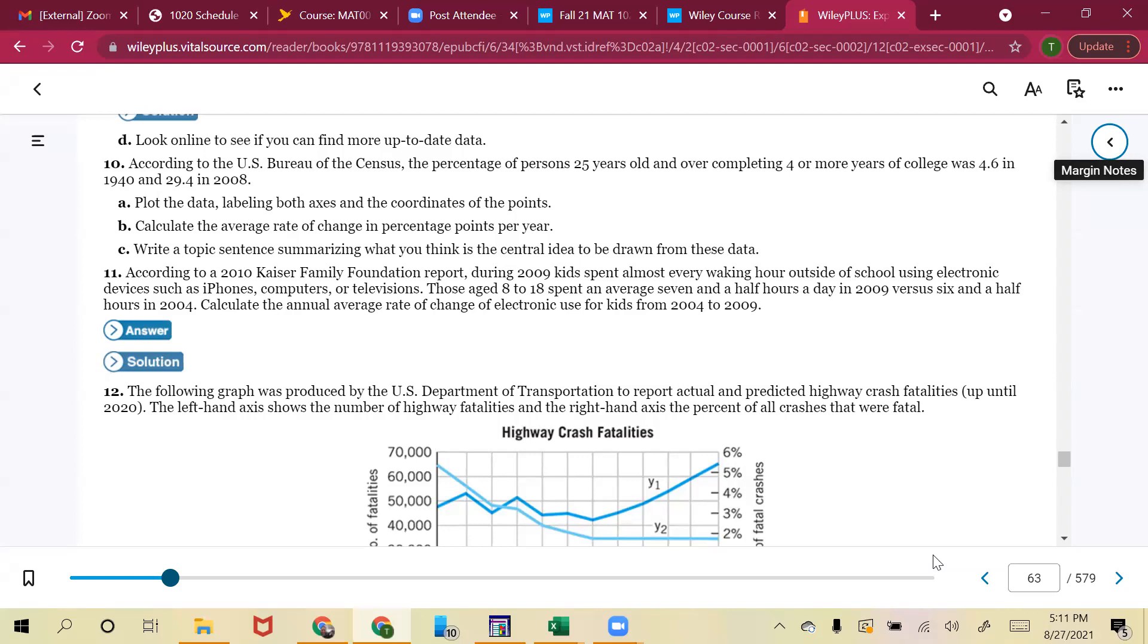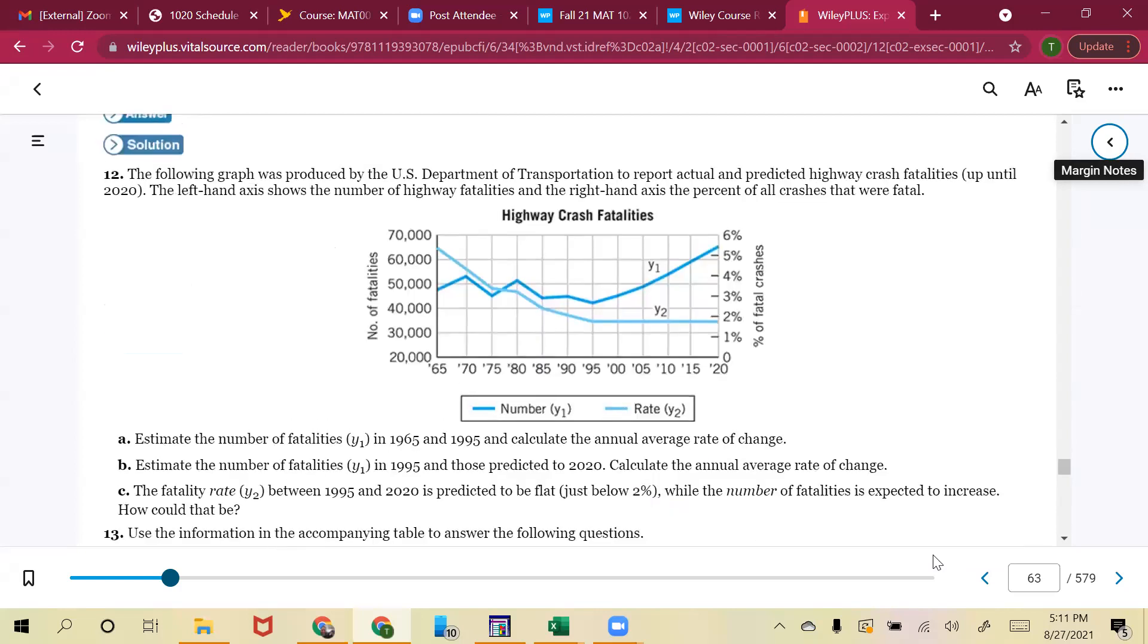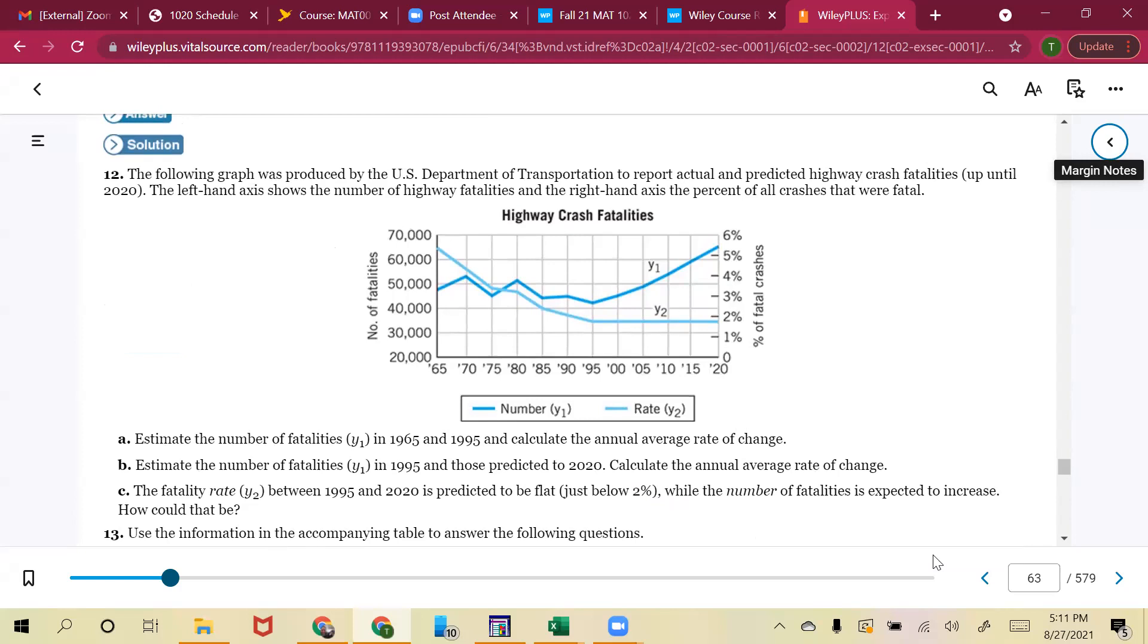And let's look at number 12. So number 12, the following graph was produced by the U.S. Department of Transportation to report actual and predicted highway crash fatalities up until 2020. The left-hand axis shows the number of highway fatalities. In the right-hand axis, the percent of all crashes that were fatal. So in part A, estimate the number of fatalities while one in 1965 and 1995 and calculate the annual average rate of change. Part B, estimate the number of fatalities in 1995 and 2020. Calculate the average rate of change. In part C, the fatality rate between 1995 and 2020 is predicted to be flat while the number of fatalities expected increased. How could that be?